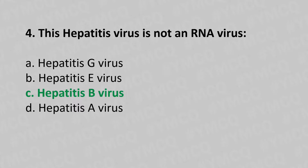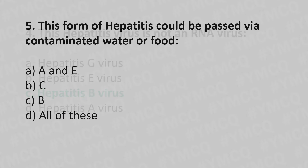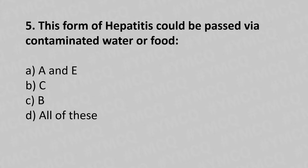Now let's move to question number 5. This form of hepatitis could be passed by contaminated water or food. Option A, A and E. Option B, C. Option C, B. Option D, all of these. And the answer is... Option A, A and E.